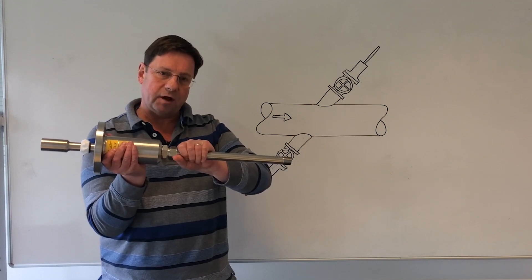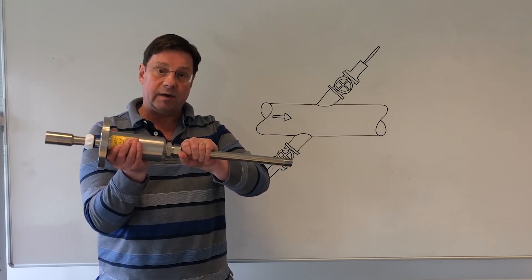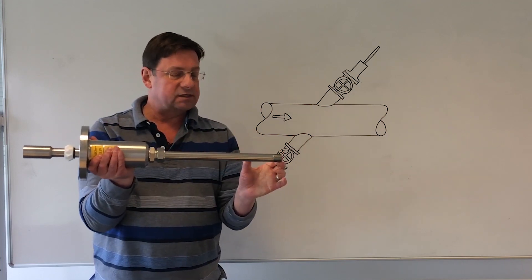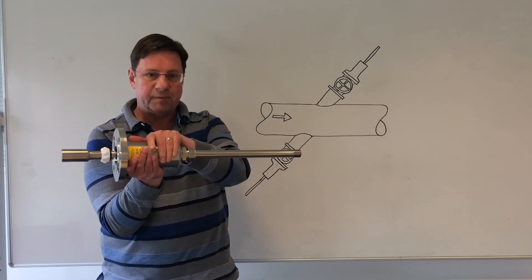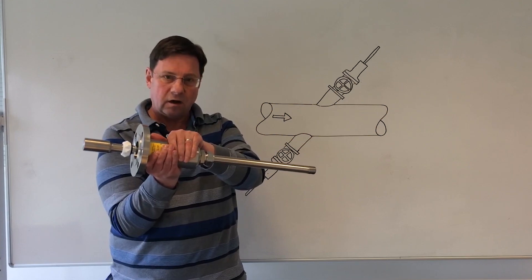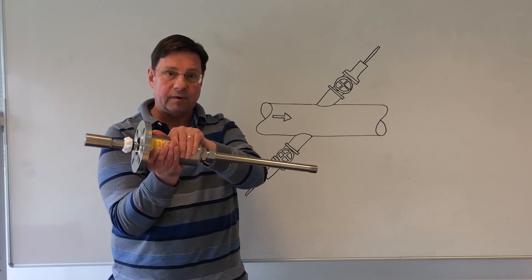At this end is the rod, and the rod holds the transducer in the correct place inside the pipe. At this end there are some electronics for sending and receiving signals. This part is the packing box, and that's used for holding the whole assembly onto the pipe in the correct place.